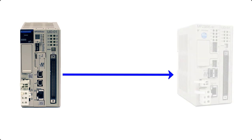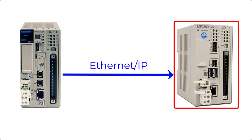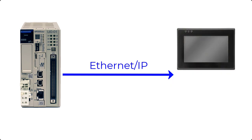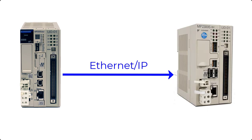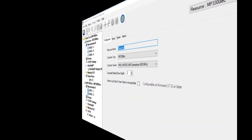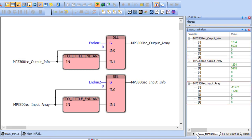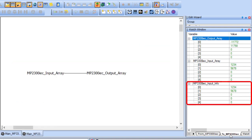For example, I have an MP3300 IEC controller, which has a big Endian processor, communicating with an MP2300S IEC controller, which has a little Endian processor, over Ethernet IP. The MP2300S IEC controller signifies any little Endian processing device, like an HMI or third-party PLC. For ease of use, I have included both controllers in a multi-resource project. In this project, I am sending an array of variables from the MP3300 IEC controller to the MP2300S IEC controller, which in turn is relaying that information back to the MP3300 IEC controller.